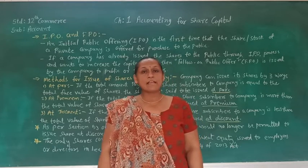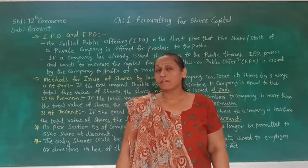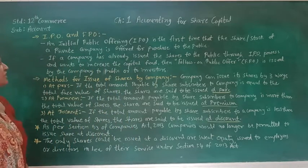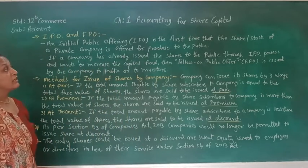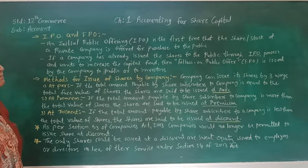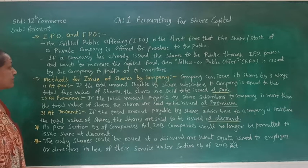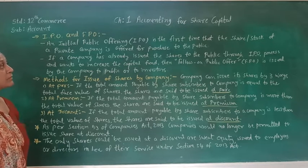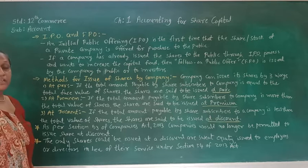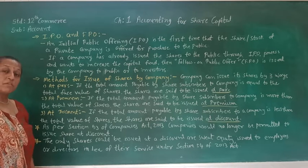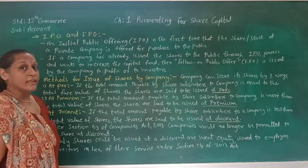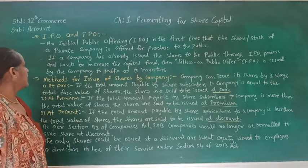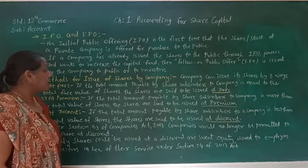Let's see IPO and FPO. IPO means Initial Public Offering. It is the first time that the share or stock of a private company is offered for purchase to the public. When a private company for the very first time makes a public offering, it is called an IPO. The full form of IPO is Initial Public Offering.